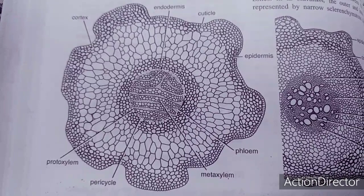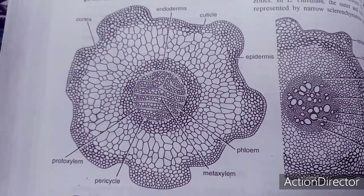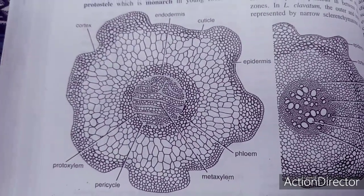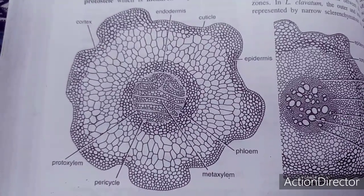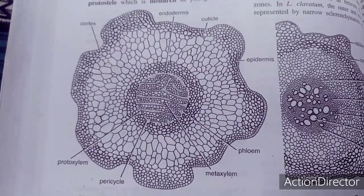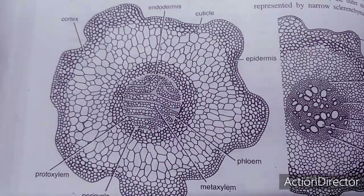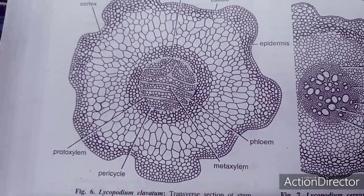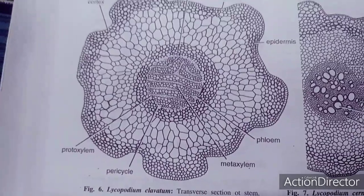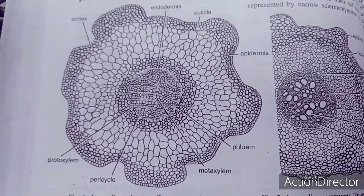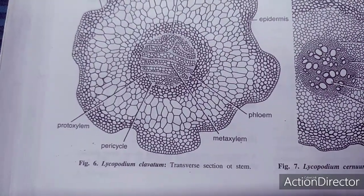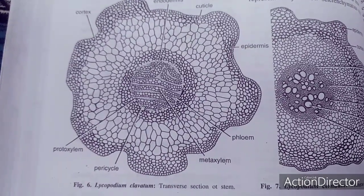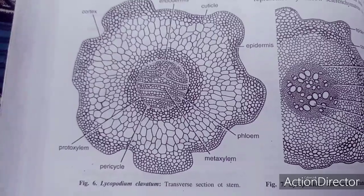In the stem, there are three clear zones: epidermal cells, sclerotic cells, and thin-walled chloroplast-bearing cells. Then there is endodermis, pericycle, phloem, metaxylem, and protoxylem. A very interesting aspect is the protostele condition. All four types of protostele have been recognized in Lycopodium: actinostele, haplostele, mixed protostele, and plectostele.